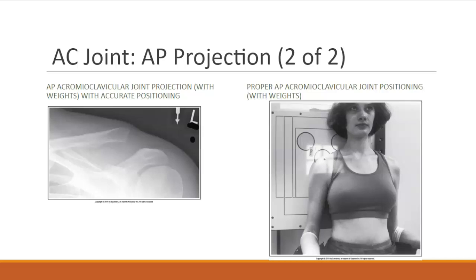All of the common positioning errors discussed for the clavicle and shoulder are applicable to AC joint projections. We also want to look for rotation and any plane tilting to ensure we provide an image of quality. This concludes our image analysis. If there are any questions or concerns, please reach out via clinic or email. Thank you for participating.